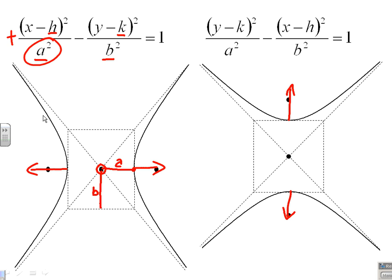Now, in this case, the Y is the positive term. Therefore, we call what's underneath it A squared. And our hyperbola, as you can see, opens up and down. So, pretty nice introduction to our hyperbolas there.